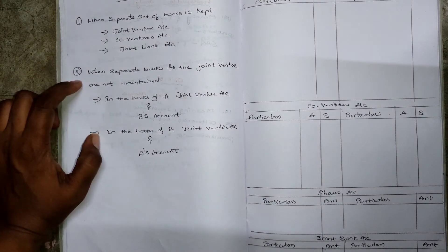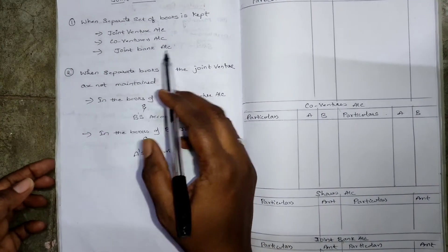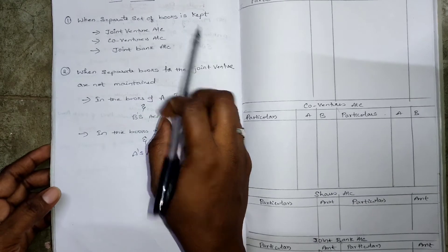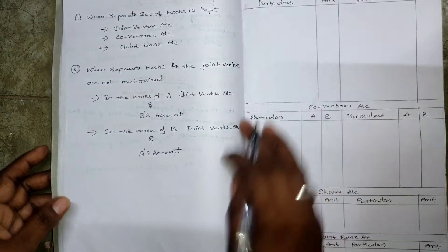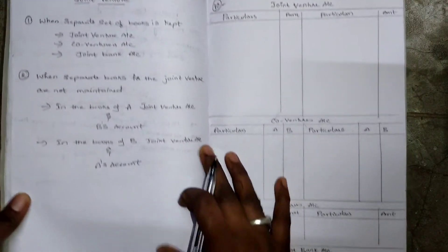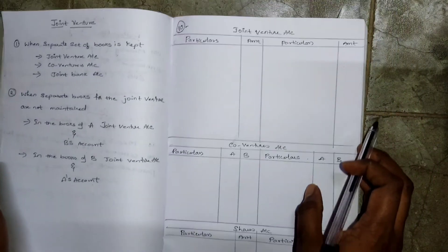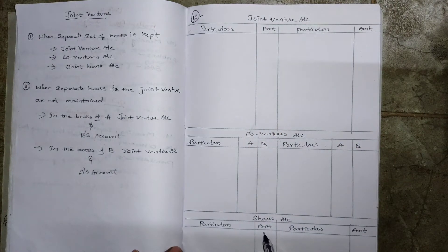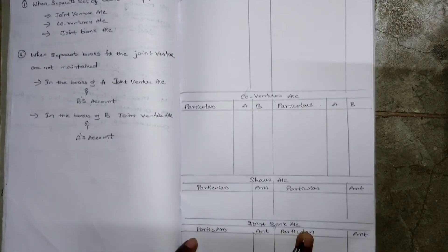The second method is when a separate set of books is kept. In this case — referring to RP3010 10th question — you open the accounts: Joint Venture Account, Co-Venture Account, Shares Account (if shares are mentioned in the question), and Joint Bank Account. Total 4 accounts.